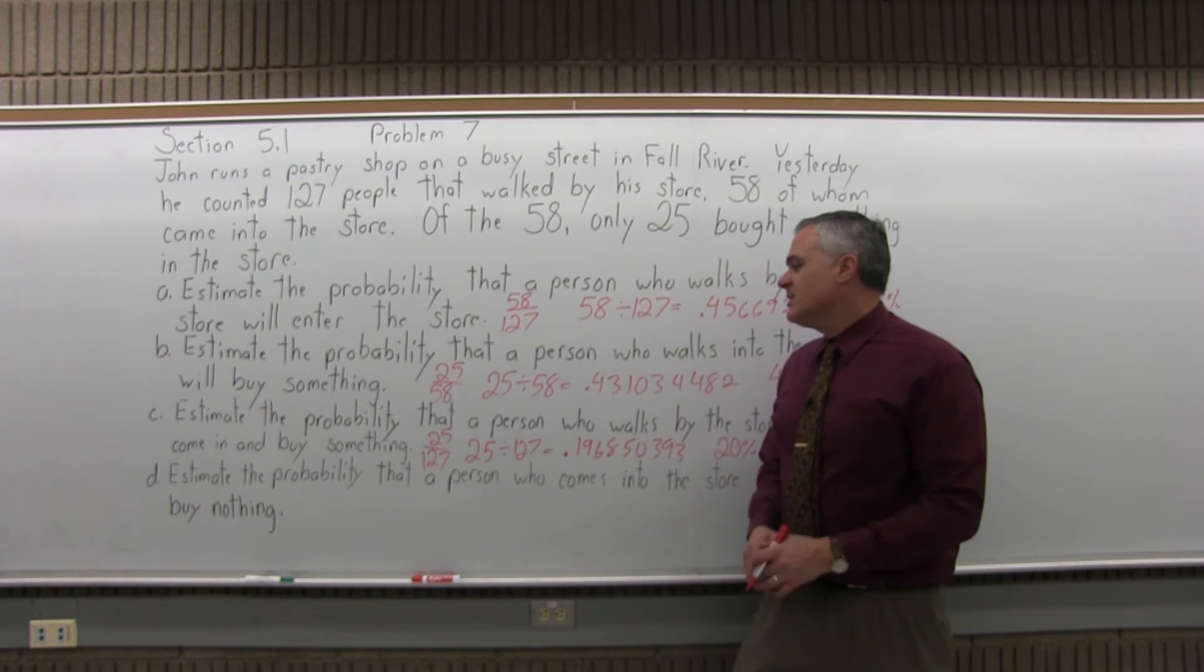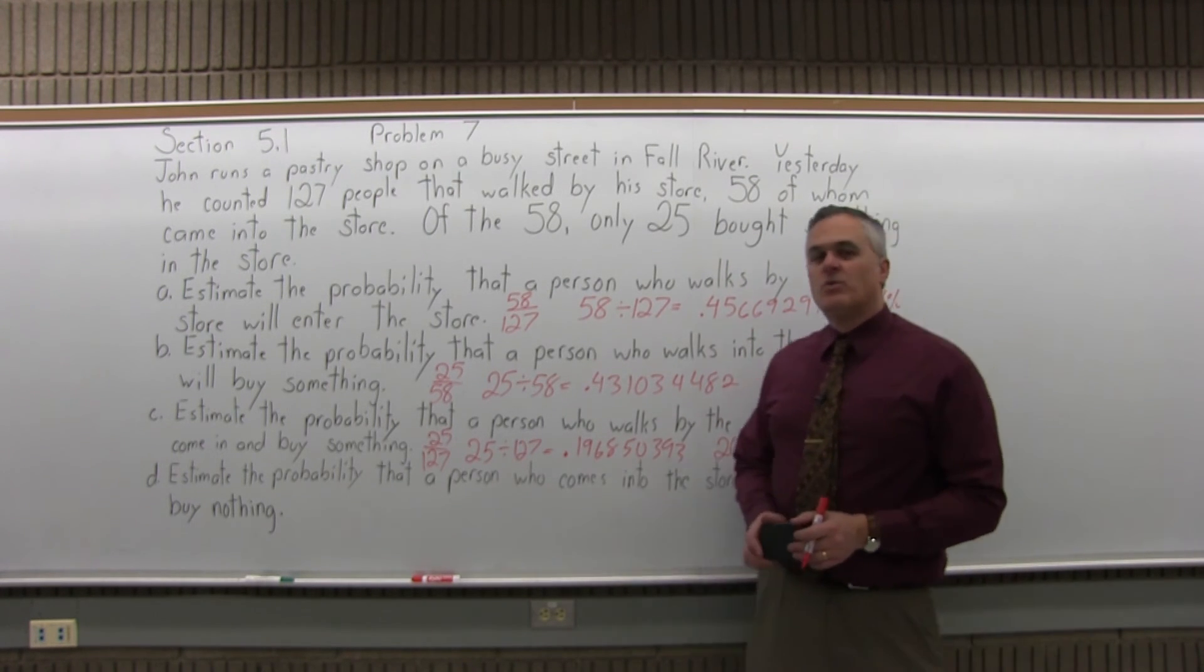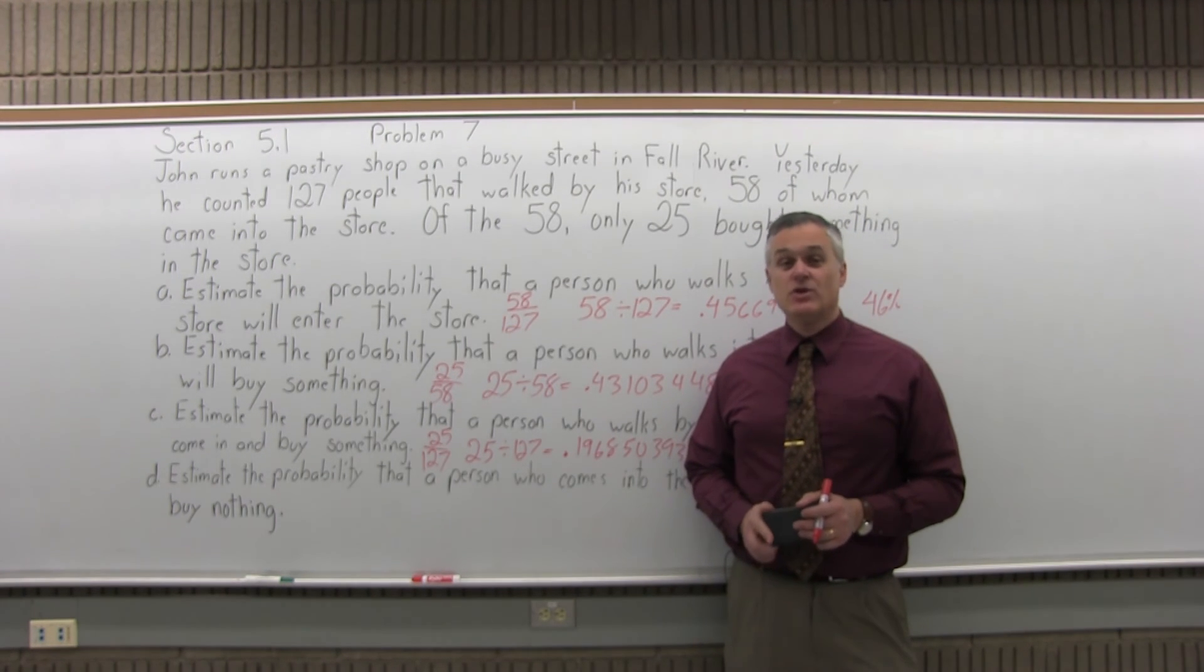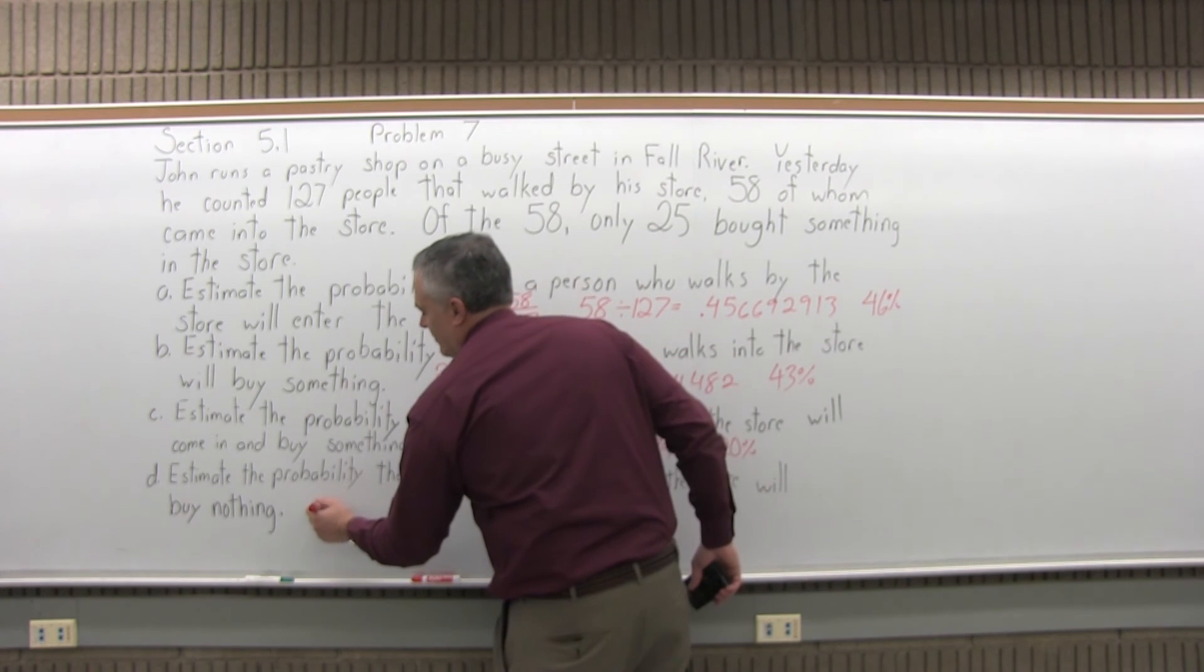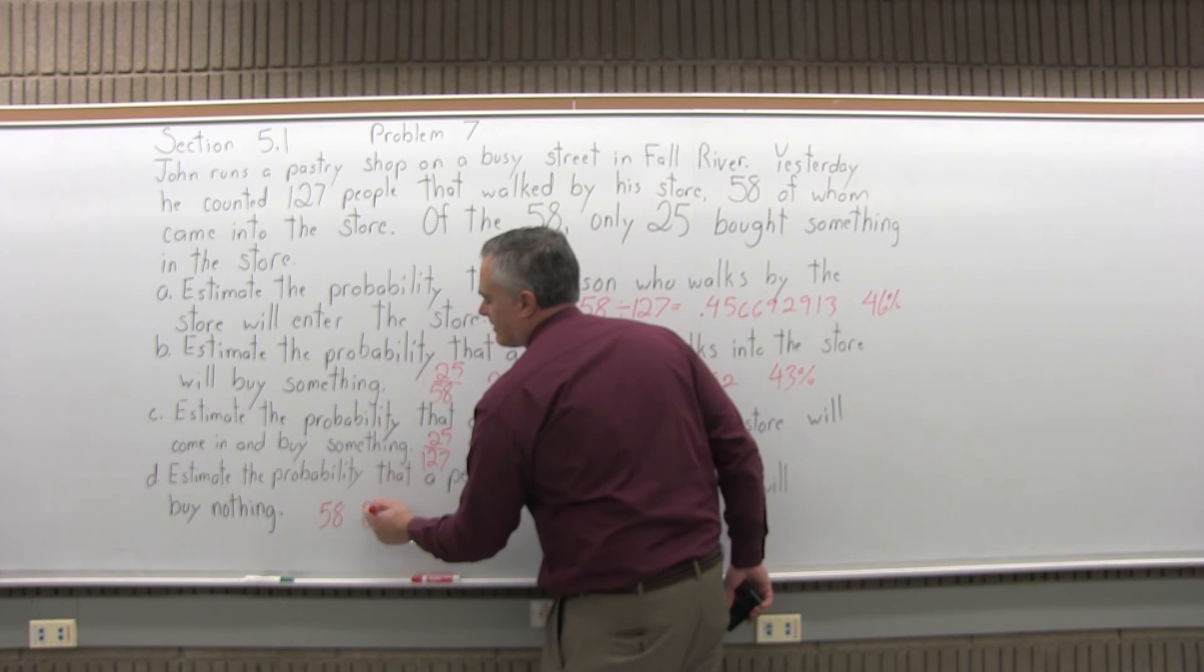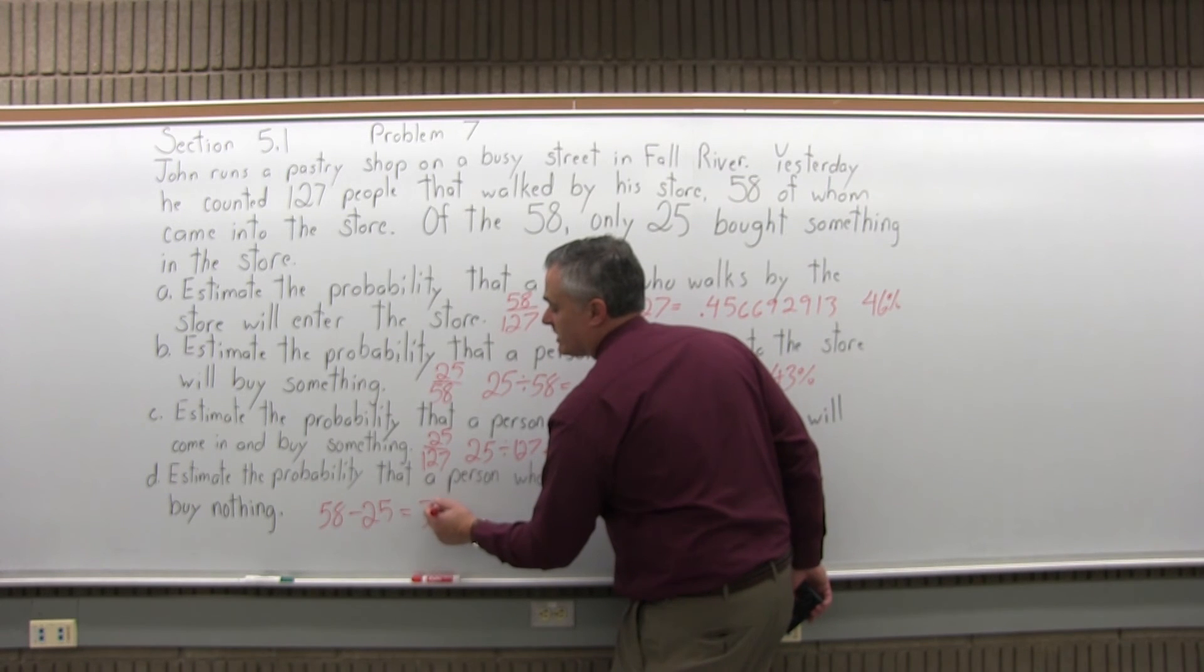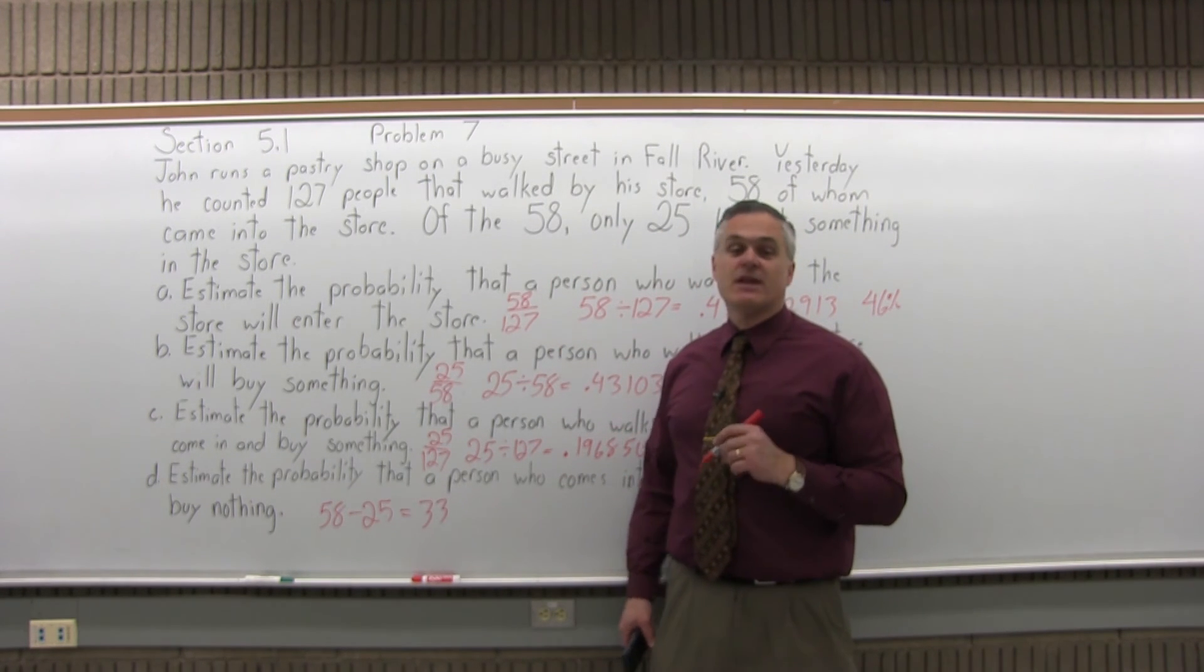Part D: estimate the probability that a person who comes into the store will buy nothing. The question doesn't tell you this directly, but you can figure it out. There were 58 people that came in, 25 bought something. Subtracting 25 from 58 gives 33 that bought nothing.